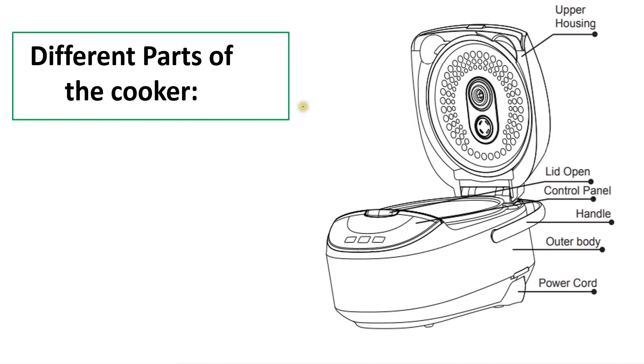This is the cooker and these are the different parts. This is the upper housing and the lid open button. This is the control panel and the outer body. Inside the outer body at the bottom, there is a heating plate which generates the required heat for cooking the food.